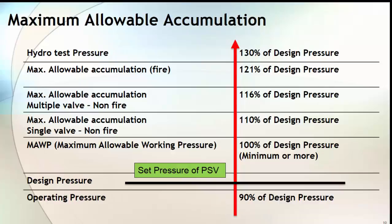Now look at this table, which shows maximum allowable accumulation based on the number of PSVs mounted on the equipment and also on fire and non-fire type of equipment. If your equipment is fitted with a single valve and is non-fire type, the maximum allowable accumulation is 110% of design pressure. If fitted with multiple valves, the maximum allowable accumulation is 116% of design pressure. In case of fire type equipment, the maximum allowable accumulation is 121% of design pressure.